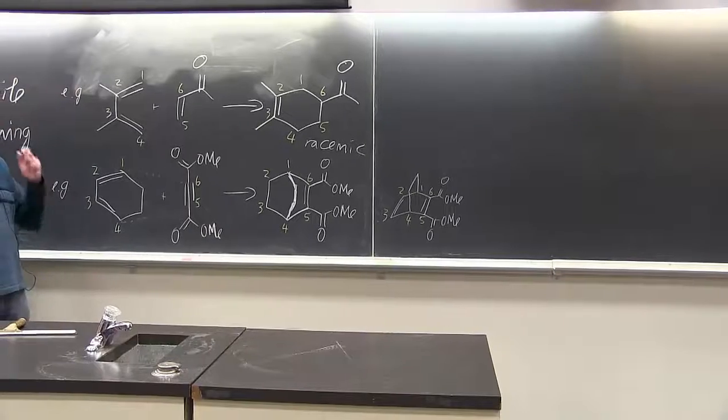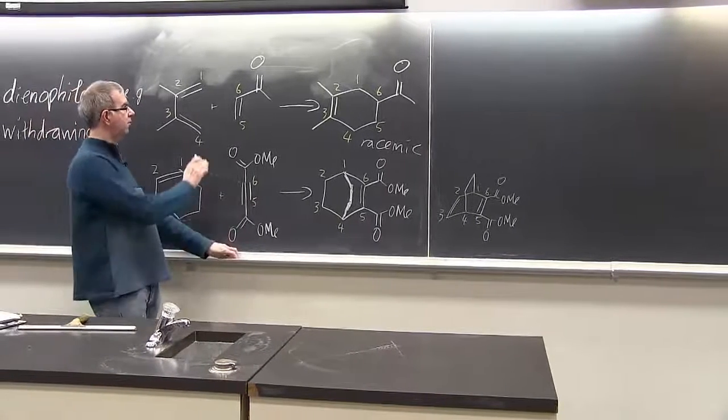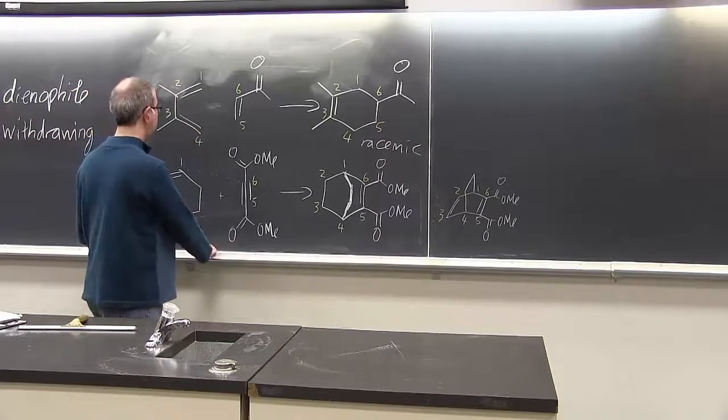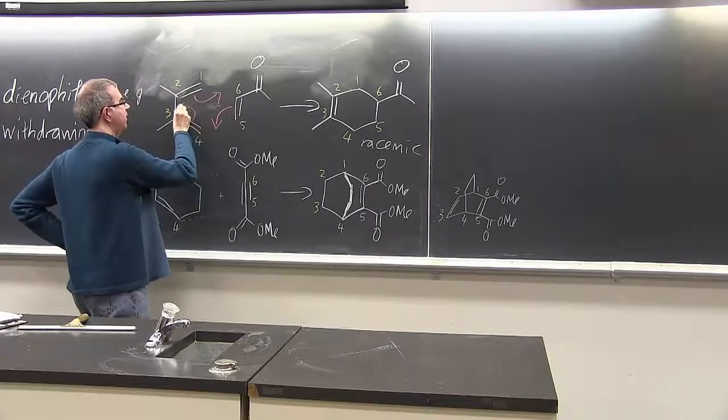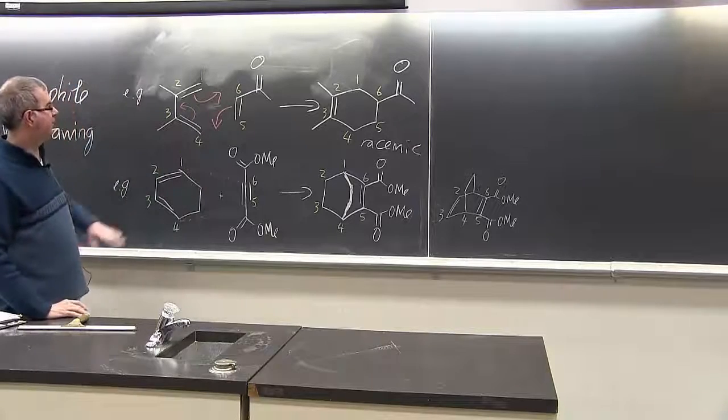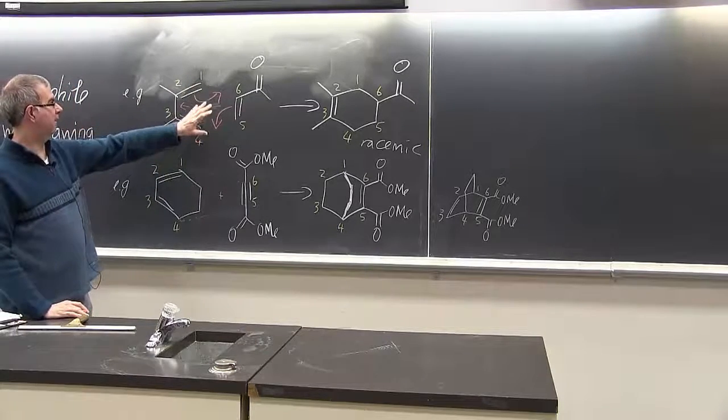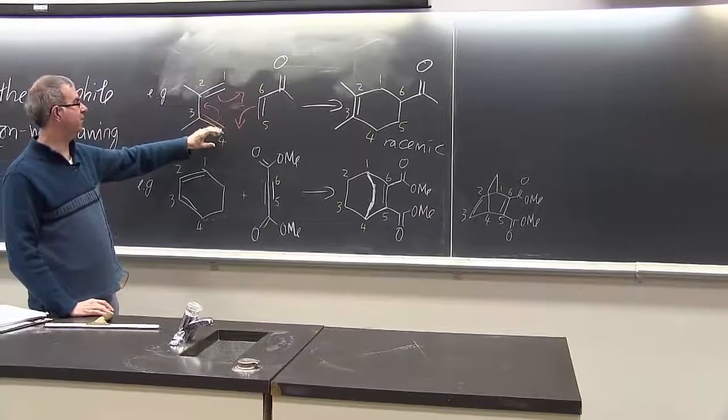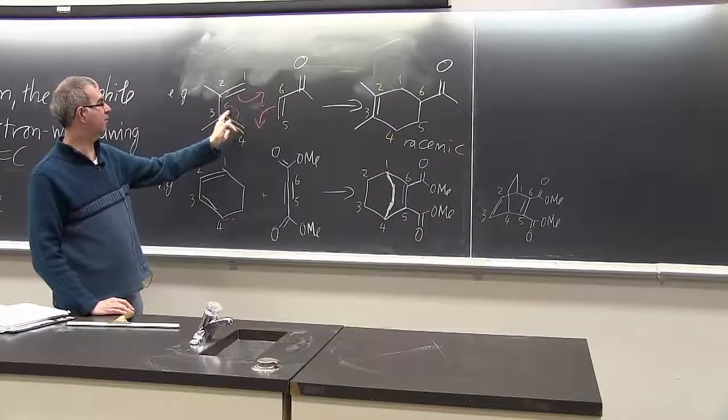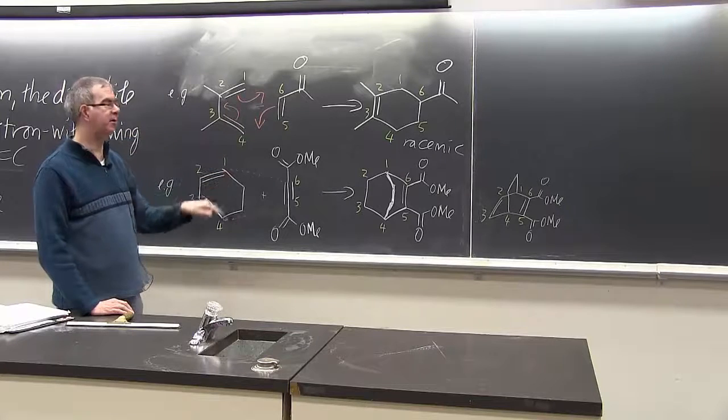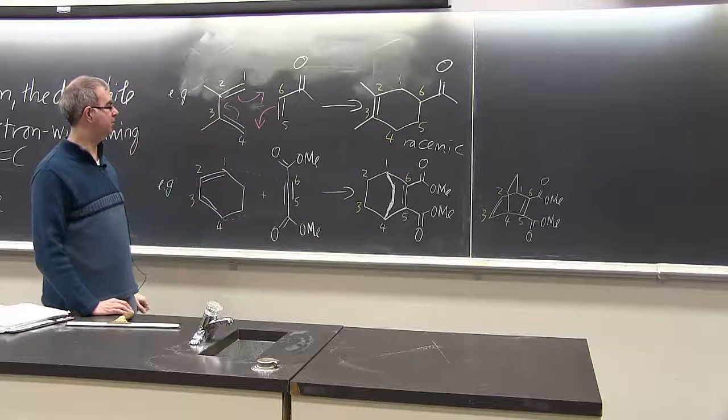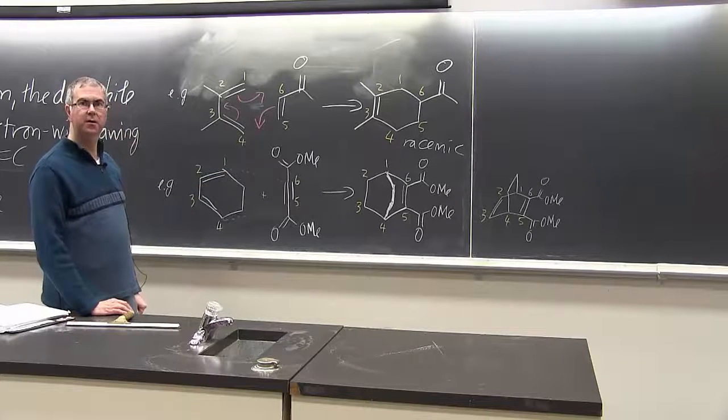So those are two typical examples of the Diels-Alder reaction. And notice you can always draw the arrows in the same way. It's always a cyclic transition state. The cyclic set of arrows. By the way, the arrows can go either clockwise or counterclockwise. And because they're going in a cycle, they give the same product each time.